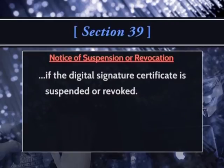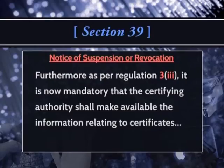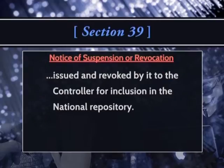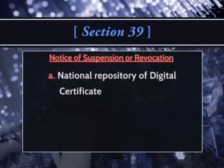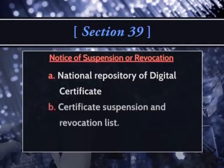As per regulation 3, it is mandatory that the certifying authority shall make available the information relating to certificates issued and revoked by it to the controller for inclusion in the national repository. The controller is presently maintaining the following online repositories: the national repository of the digital signature certificate, and the certificate suspension and revocation list.